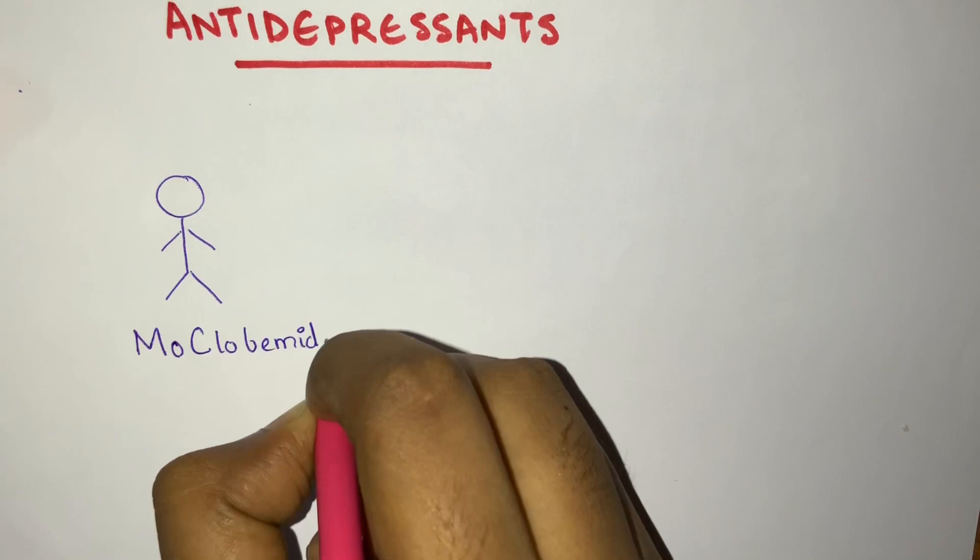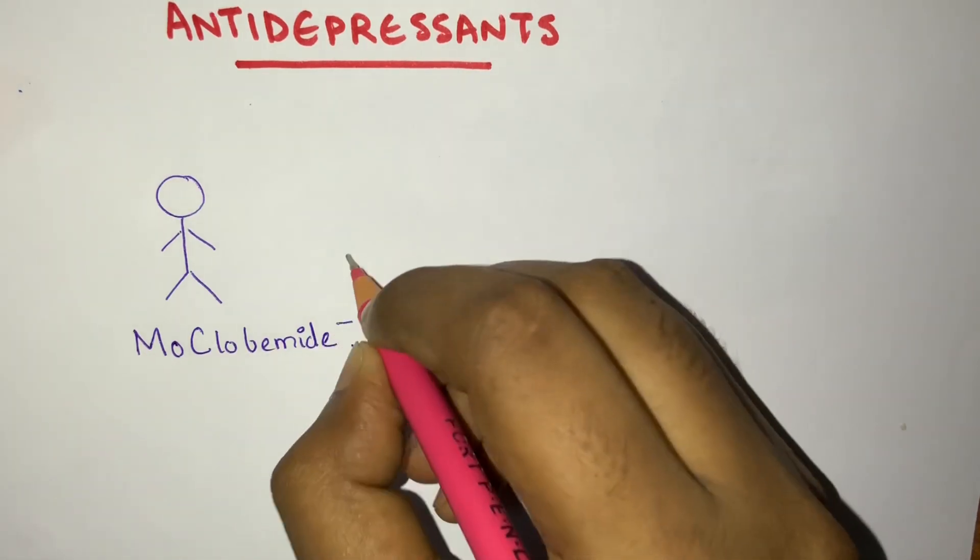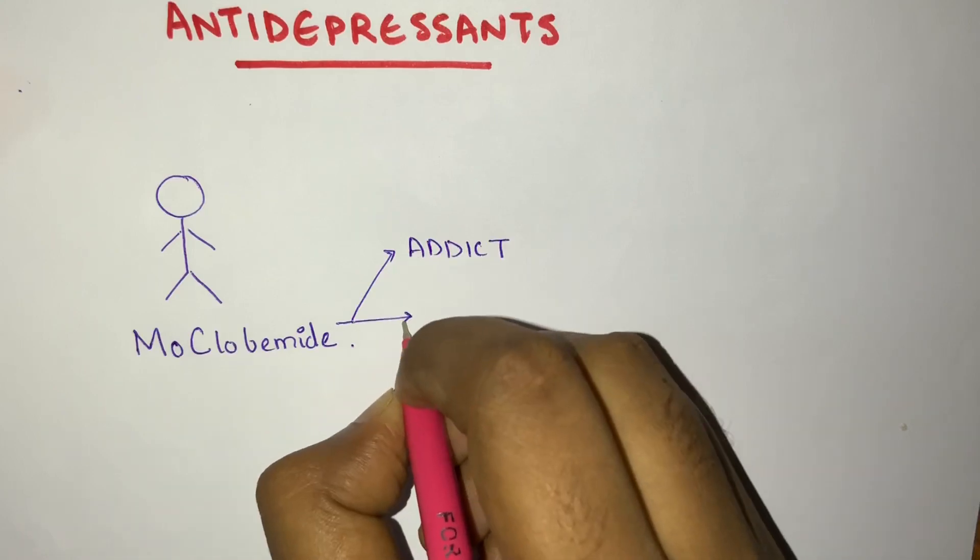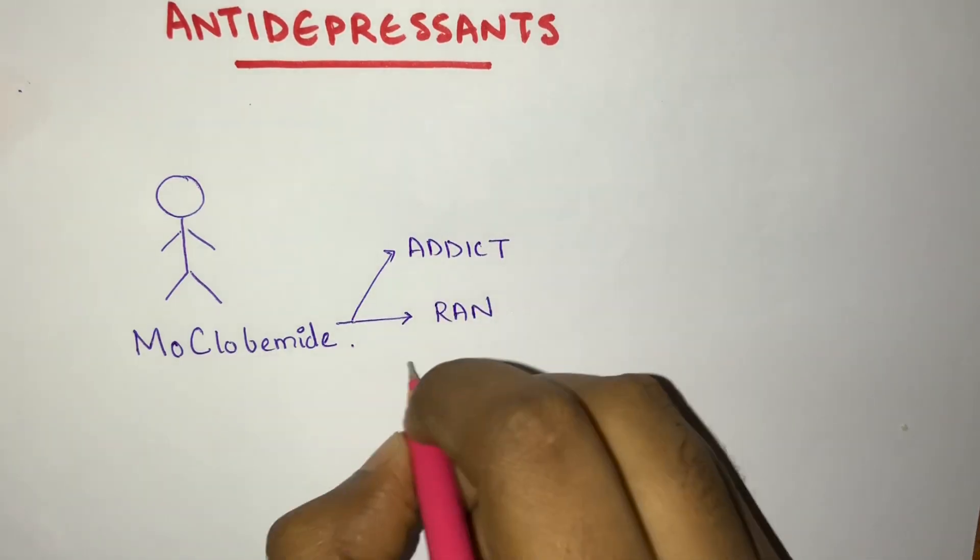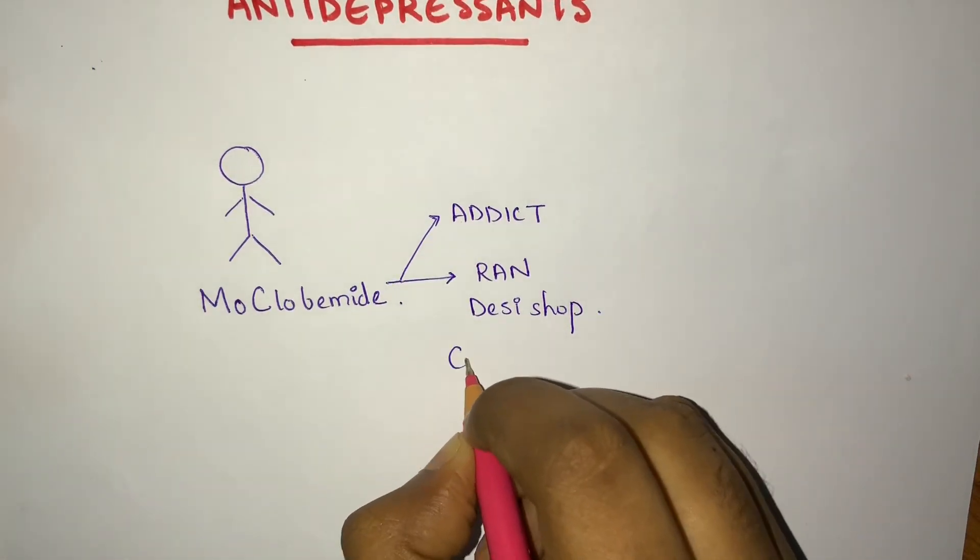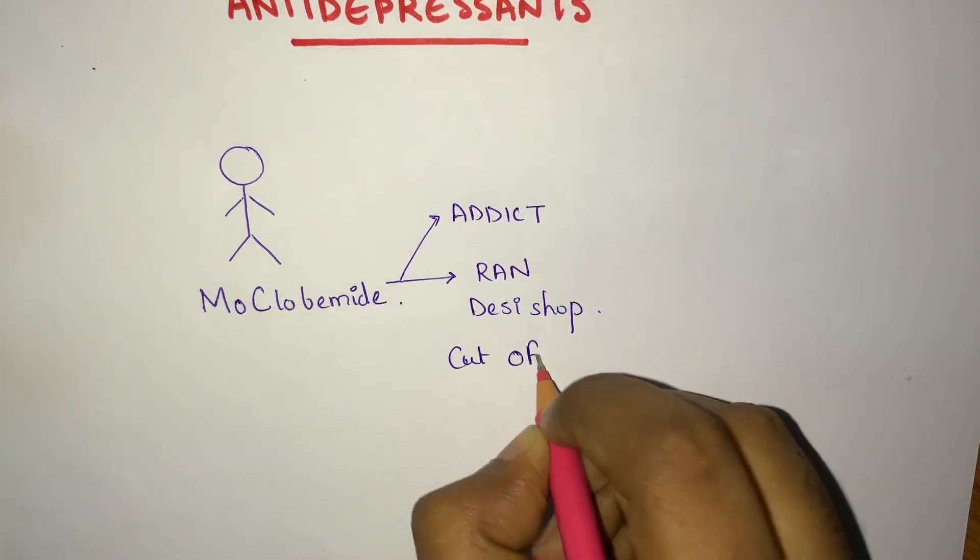So Mooglobimide was an addict and he ran a desi shop. Mooglobimide was an addict and ran a desi shop. So he began to remain cut off from his surroundings.